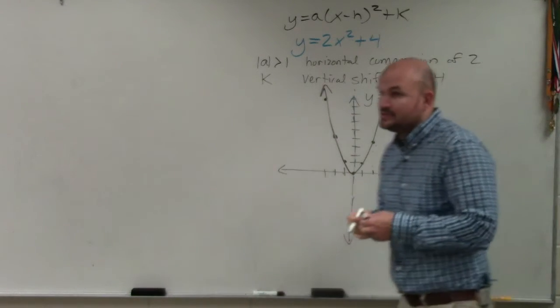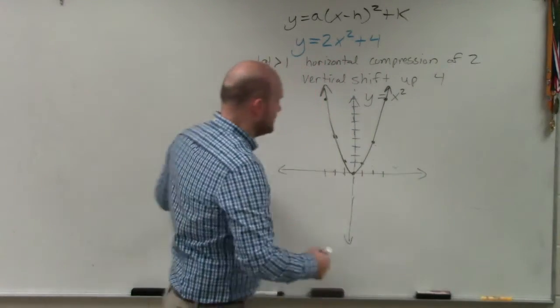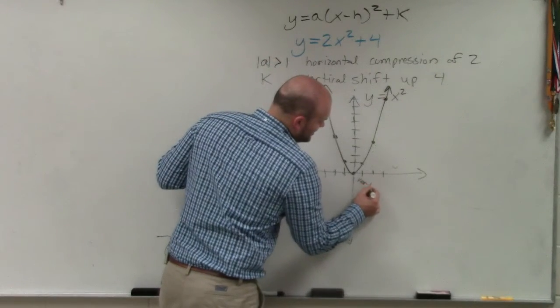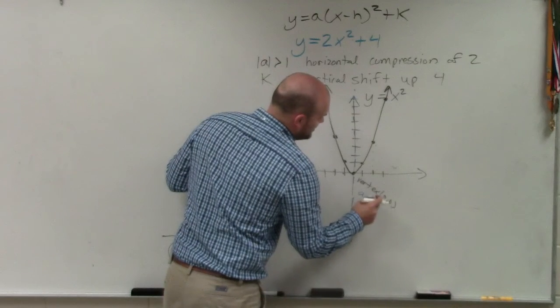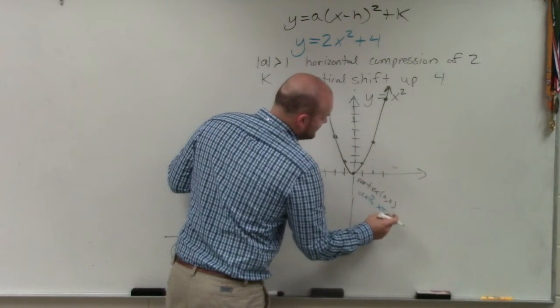Now, there's a couple things we need to remember about this one. Here again, remember your vertex is at (0,0). And your axis of symmetry is at x equals 0.